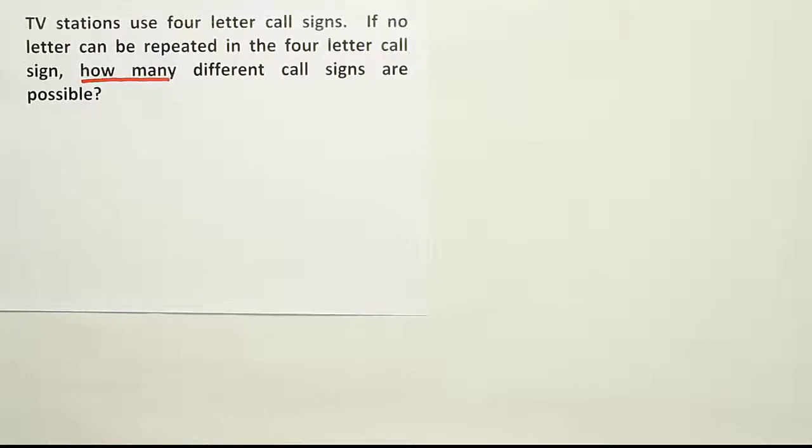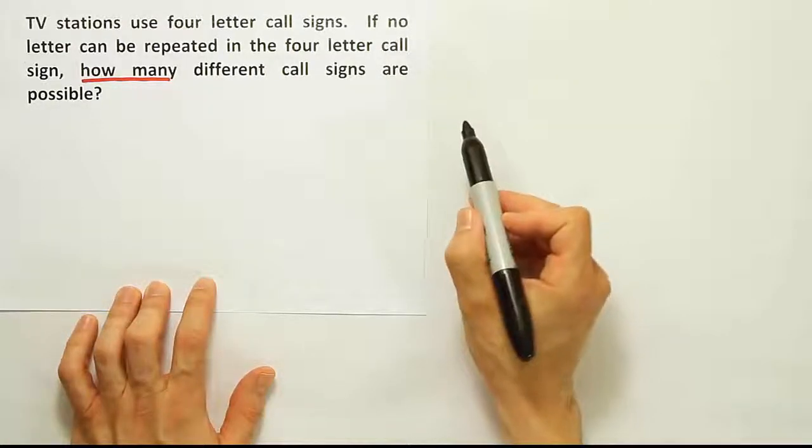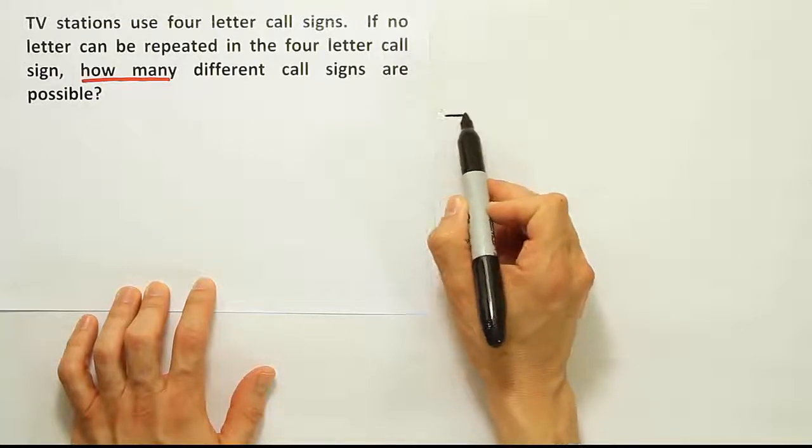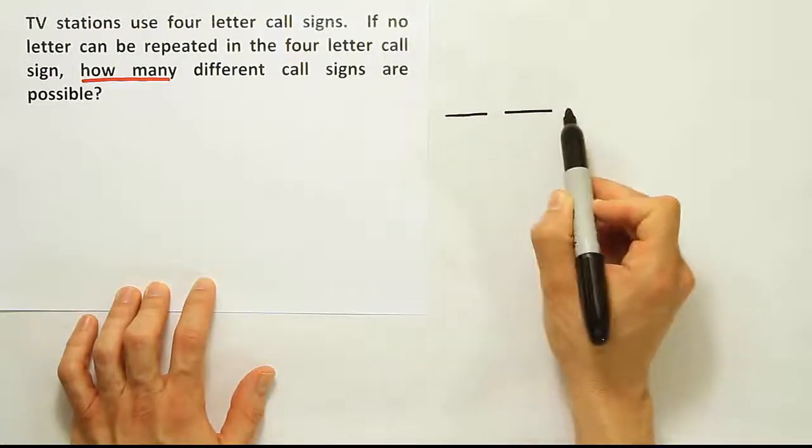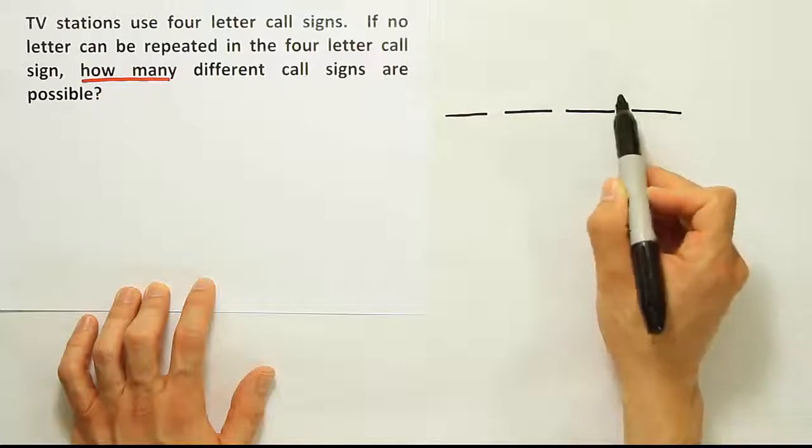So if it's not that, we're going to try fundamental counting rule. Remember, for fundamental counting rule, you have to list a space for every decision that must be made. There are going to be four letters in your call sign, so you'll have to choose four letters to create your TV station name.